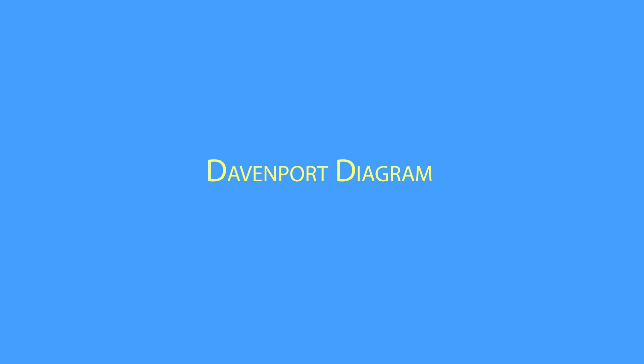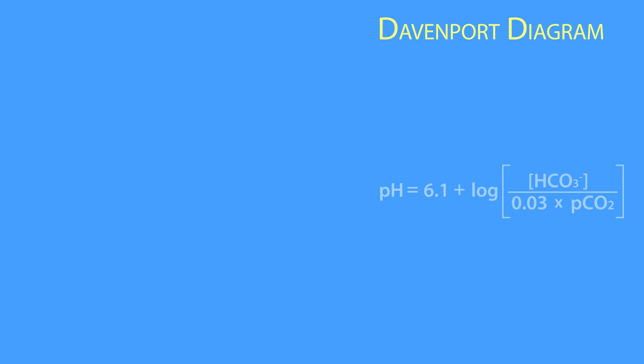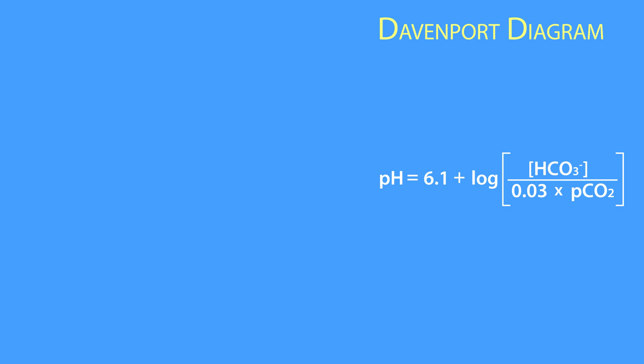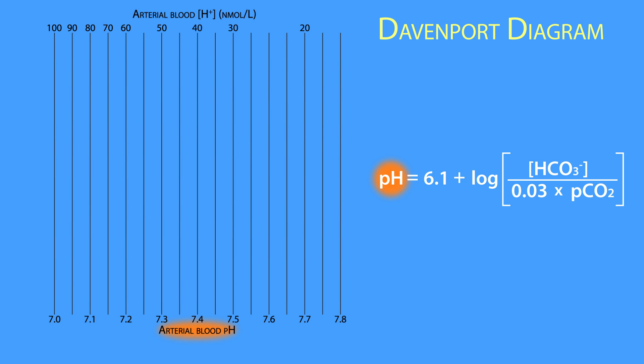The Davenport diagram provides a graphical representation of the Henderson-Hasselbalch equation. It shows the arterial pH plotted along the x-axis, which usually ranges from 7.0 to 7.8. Although the Henderson-Hasselbalch equation does not show the arterial hydrogen ion concentration, it is included in the Davenport diagram and is plotted along the upper portion of the x-axis.